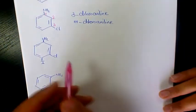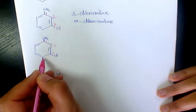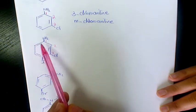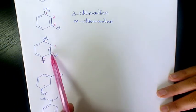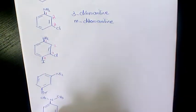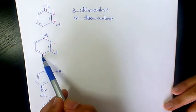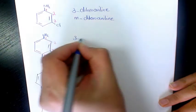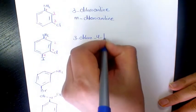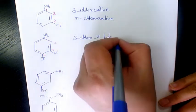Next one: if this is the number one carbon, we have two, three, and four. If we start numbering from the other side we get one, two, three, four, and five — so we need to start numbering the way that gives smaller numbers. We have 3-chloro and 4-iodo, so the name is 3-chloro-4-iodoaniline.